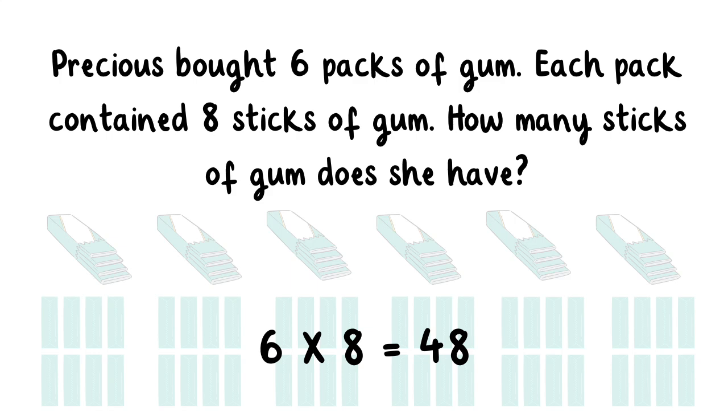Six times eight equals 48. So, Precious has 48 sticks of gum.